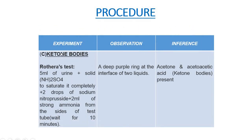The next procedure is for ketone bodies, and we perform Rothera's test. We take 5 ml of urine sample and add solid ammonium sulfate (NH₂SO₄) to saturate it completely. Then we add 2 drops of sodium nitroprusside solution and 2 ml of strong ammonia from the sides of the test tube and wait for 10 minutes. We observe a deep purple ring at the interface of the two liquids, which shows the presence of acetone and acetoacetic acid — the ketone bodies.